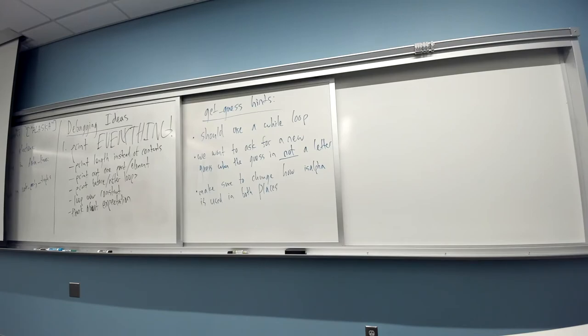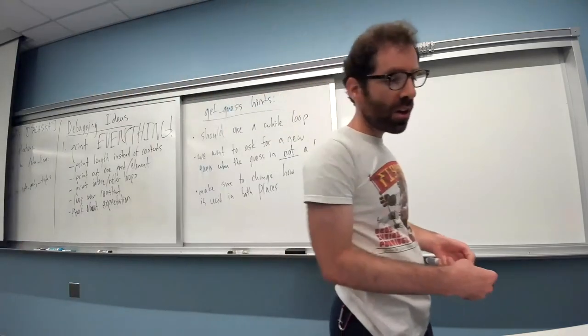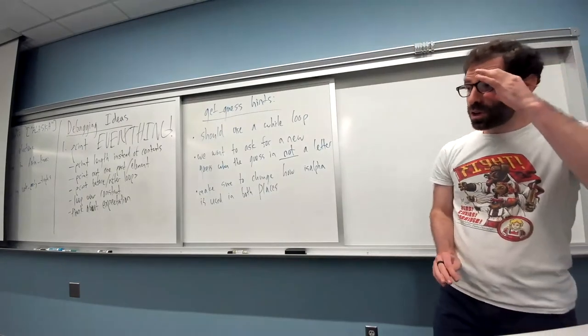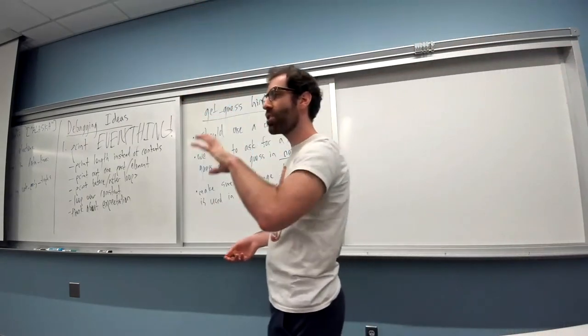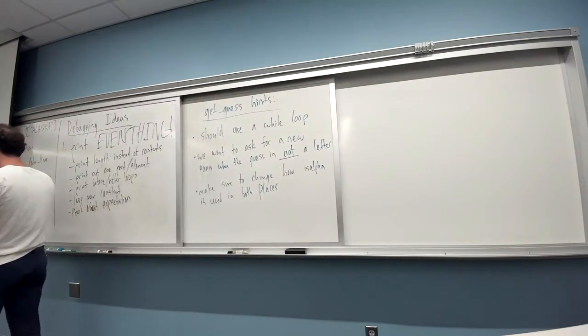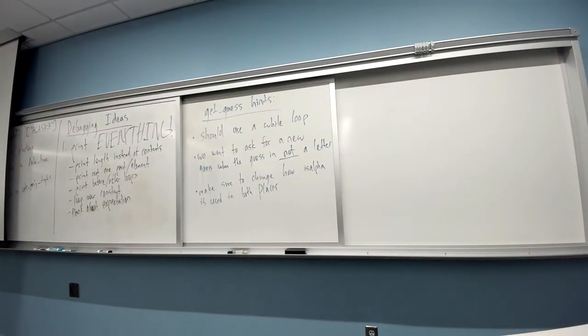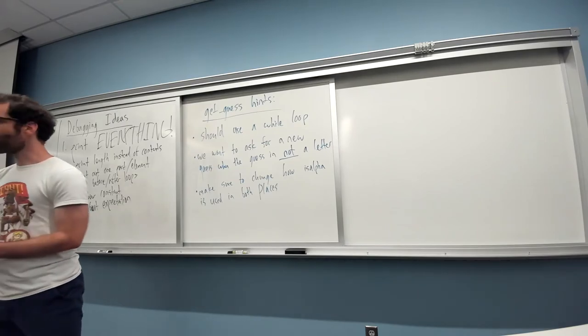So, I have some hints for the bugs and get_guess up on the board. In a couple minutes, we'll start looking at the next section, the play section. So, it's fine if you haven't fixed the two get_guess bugs before then. I just want to make sure that we have a chance to work through the bugs in the first two sections of the lab.